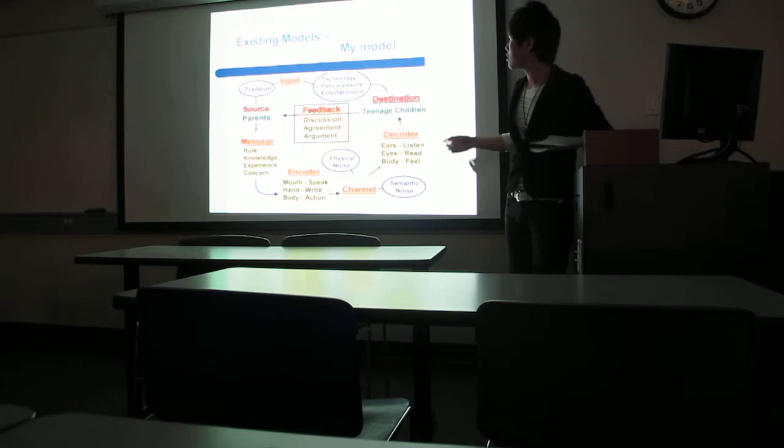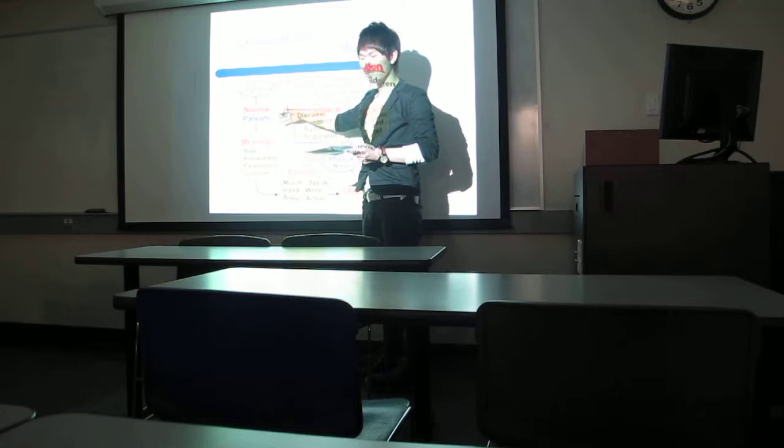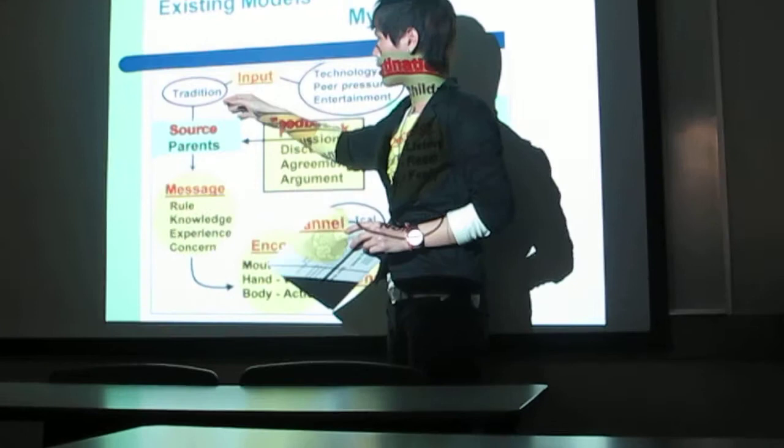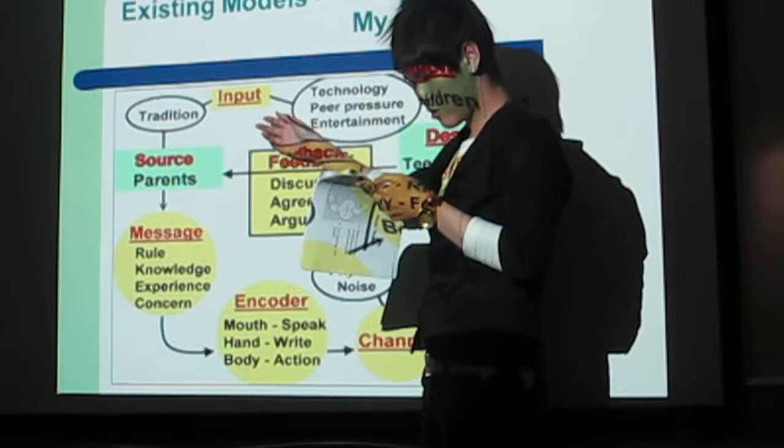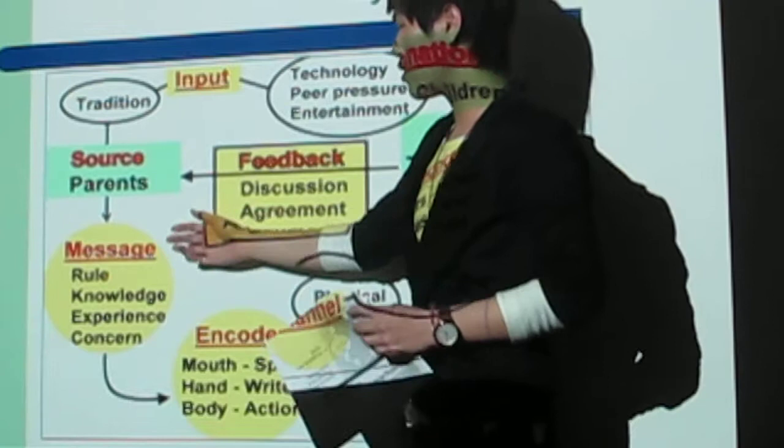This is my model. I will introduce my model. The source is parents. Before the parents send the message, there is the traditional mind input to the parent. It means it will influence the parent's thinking. So parents will send the message. The message will include the knowledge and experience and concern.